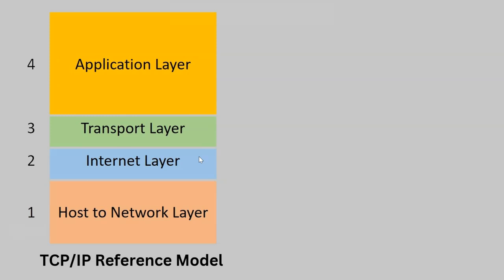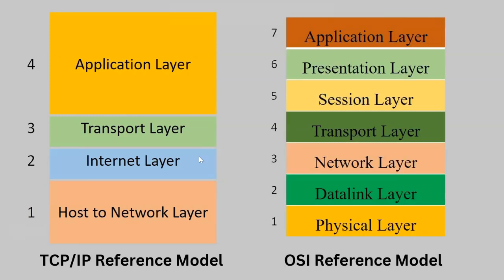Here we can see the TCP/IP reference model and OSI reference model compared. In the TCP/IP reference model, there is an application layer. In the OSI reference model, there is an application layer, presentation layer, and session layer. The responsibilities of those three OSI layers are performed by only the application layer in the TCP/IP reference model. The transport layer is the same in both models.